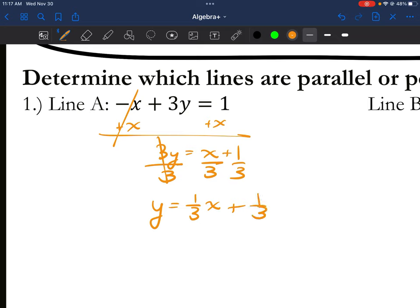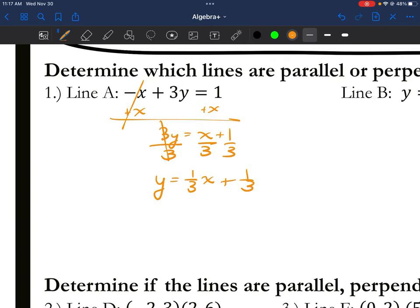So I get y equals 1 third x plus 1 third. Now, my slope on this, I can identify it, and it's going to be 1 third. So I'm going to write it at the bottom. I'm just in the habit of writing m equals 1 third. That gives me the information I'll need later on to determine if any are parallel or perpendicular.